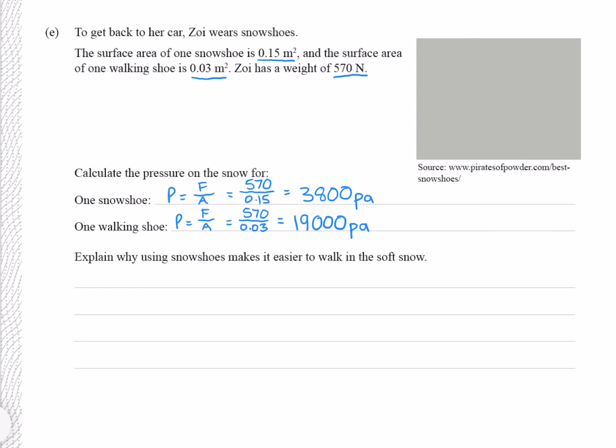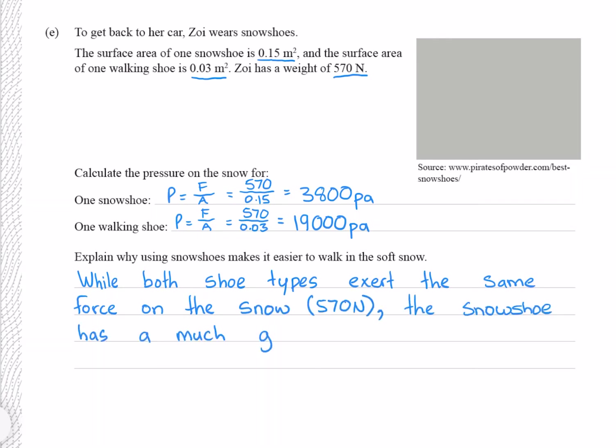Explain why using snowshoes makes it easier to walk in soft snow. The key thing is that because the walking shoe has a much smaller area, it exerts a much greater pressure on the snow, which means the walking shoe is going to sink a lot further. While both shoe types exert the same force on the snow, 570 Newtons, the snowshoe has a much greater area. It therefore exerts less pressure on the snow and sinks less.